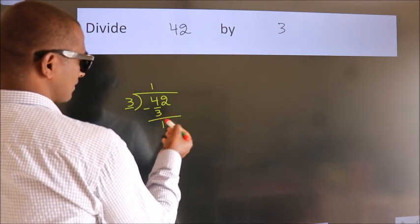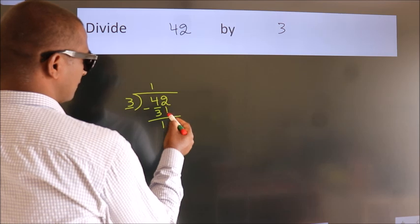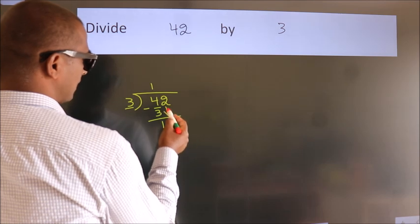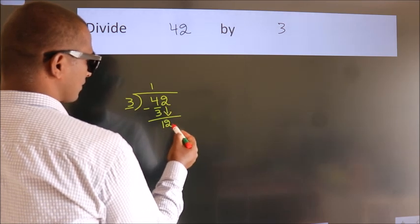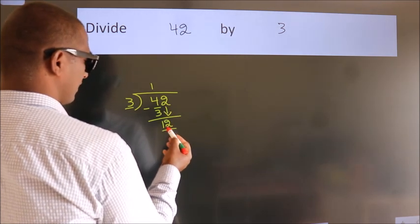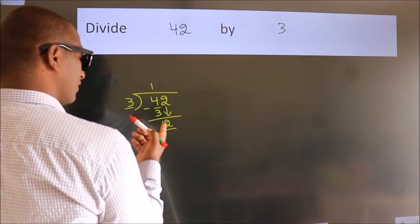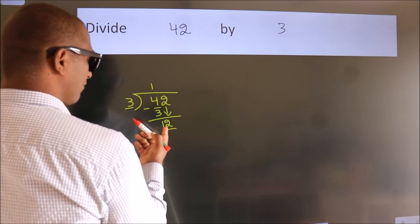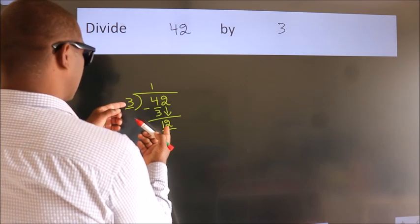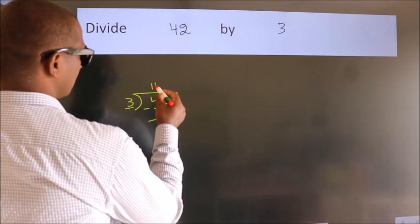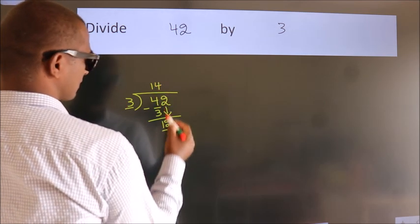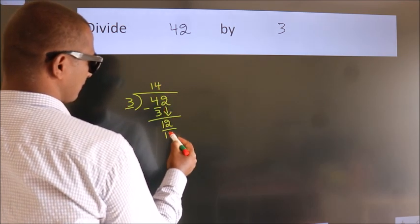After this, bring down the beside number. So, 2 down — so, 12. When do we get 12 in the 3 times table? 3 fours are 12.